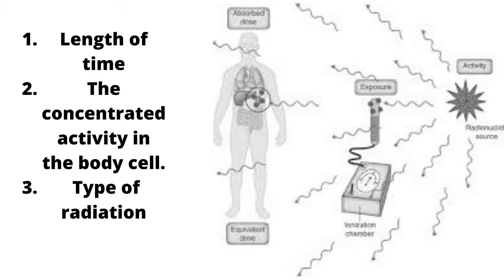Number 1: the length of time the radiation is present in the body tissue. Number 2: the concentrated activity in the body cell. And number 3: the type of radiation.